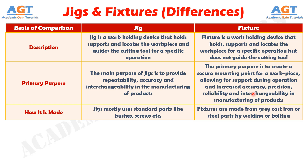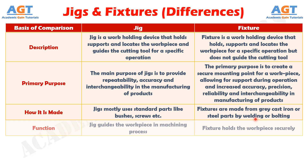If we differentiate them based on how they are made, jigs mostly use standard parts like bushes, screws etc., whereas fixtures are made from grey cast iron or steel parts by welding or bolting. Based on their function, jigs guide the workpiece in the machining process, whereas fixtures hold the workpiece securely.